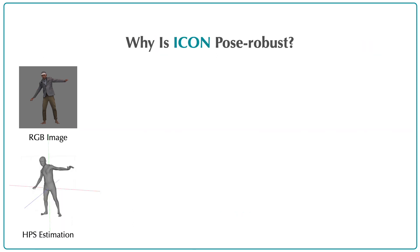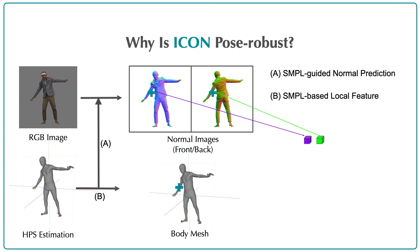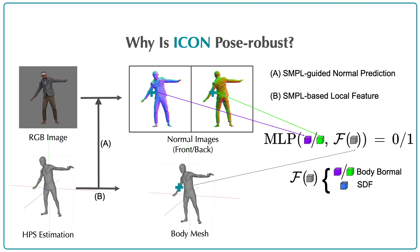ICON takes as input an RGB image of a segmented clothed human and a simple body estimated from the image. The simple body is used to guide two modules of ICON. The first one, together with the input image, infers detailed clothed human normal maps. The other one provides point-based features — for every point in 3D space, we query its pixel-aligned clothed human normals and compute the body normal and signed distance from this point to its closest point on the simple body surface.